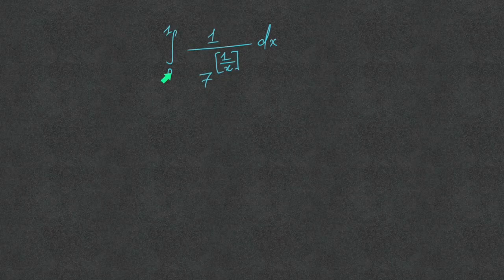Evaluate the integration from 0 to 1 of 1 upon 7 to the power of the greatest integer of 1 upon x, with respect to x.